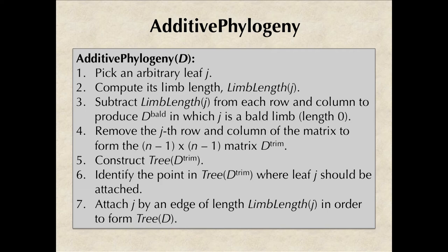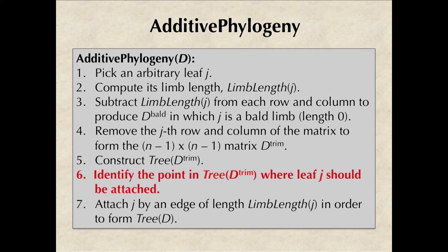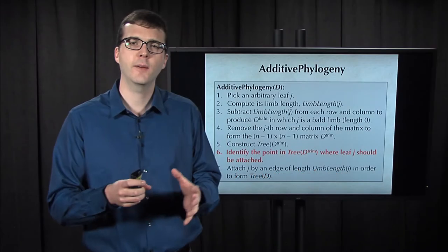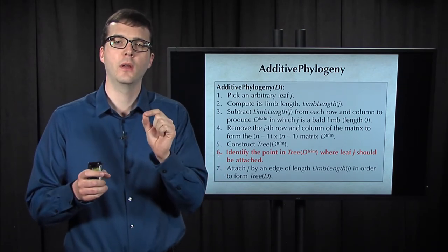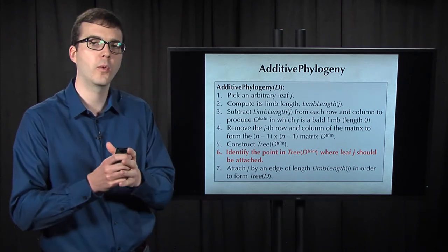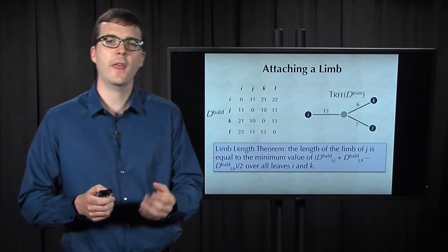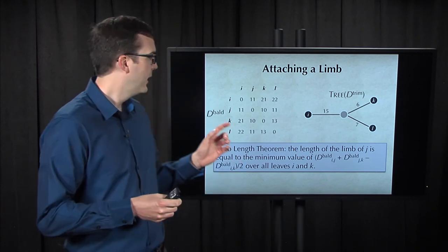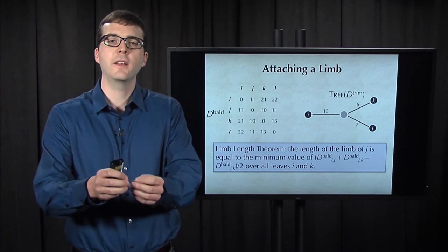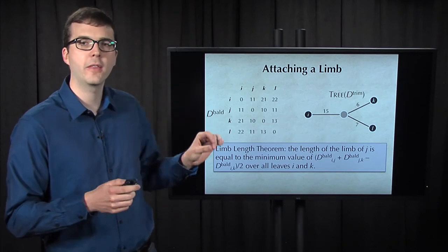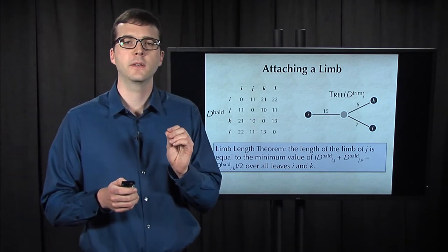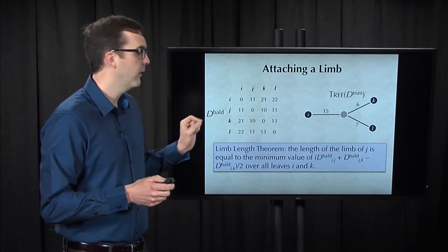If you look at this carefully and if you were paying close attention to what I was saying, then each step of this algorithm may have been clear except for step 6 where we need to identify the attachment point to put J back in the tree of the trimmed matrix to form the tree of D. This is where that bald matrix should come in handy. So remember that D bald was formed by subtracting the limb length of J from each element in the Jth row and Jth column of D.